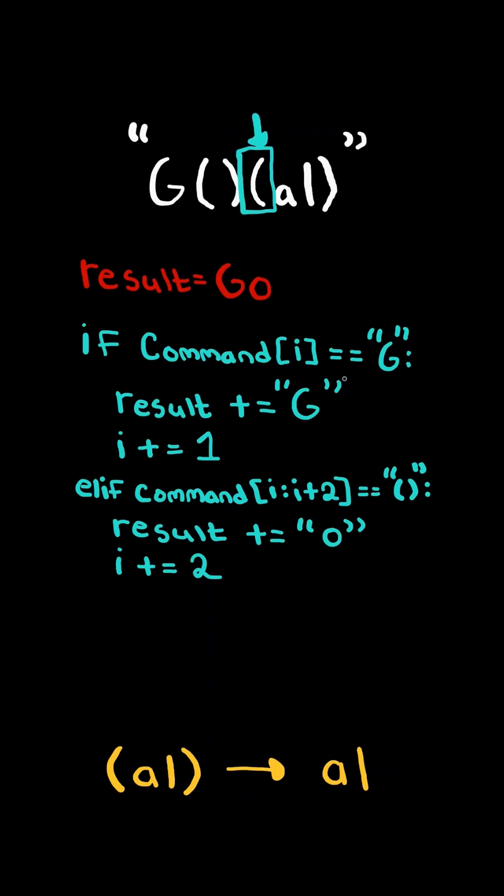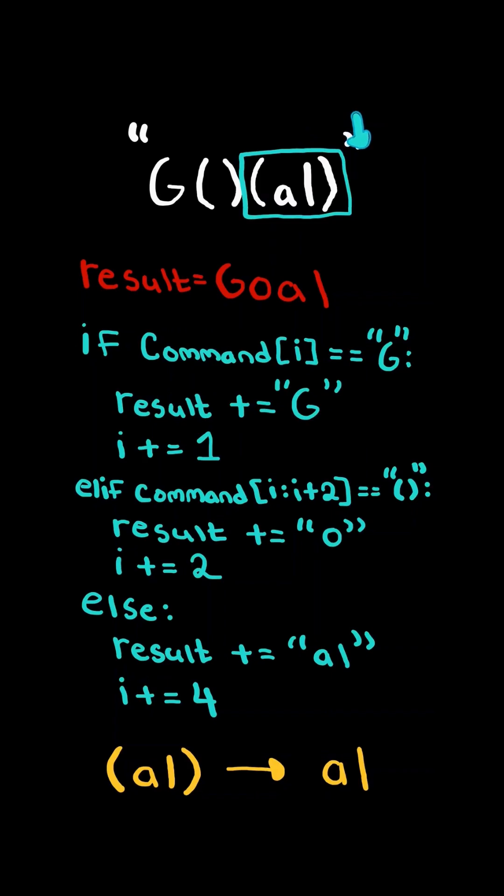Now if the character is not a G, or the two characters are not brackets, then it must be a double bracket with al. And so we add al to result, and increment the index by four.